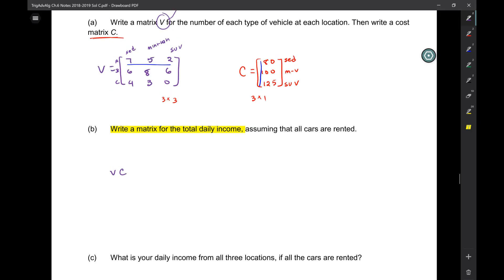So to get the cost matrix, we're going to multiply V times C. That's going to be 7, 5, 2, 6, 8, 6, 4, 3, 0 times 80, 100, 125. Okay, so this is a 3 by 3 and a 3 by 1. What's the product going to be?